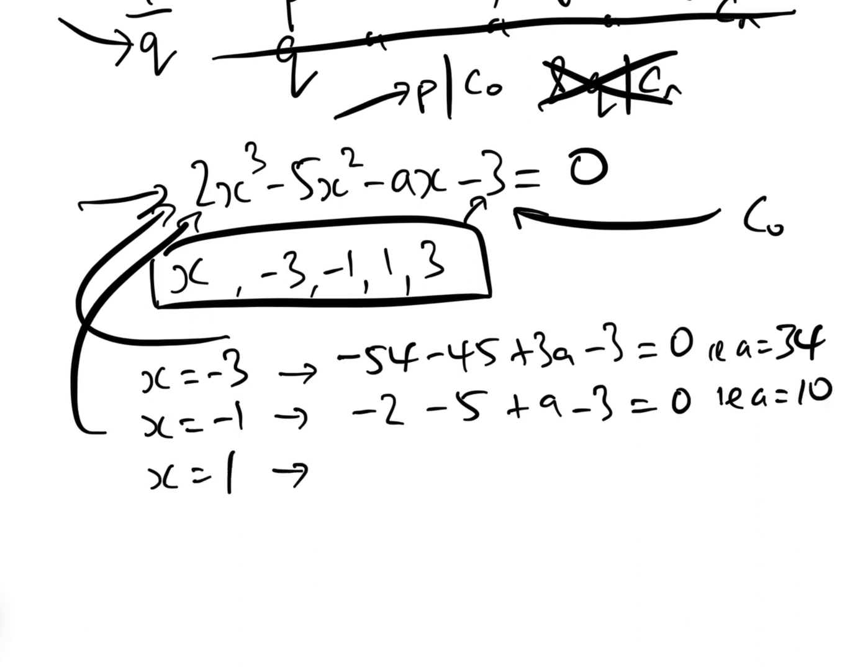When x equals 1, okay, nice and easy one, we don't have to worry with the negatives. 2 minus 5 minus a minus 3 equals 0, i.e. a equals minus 6.